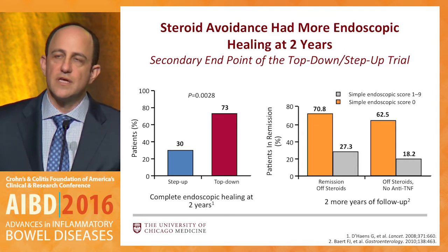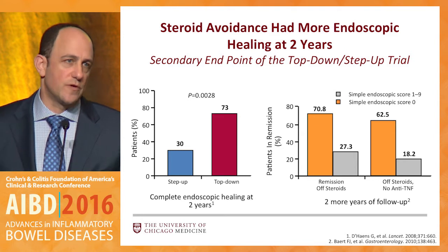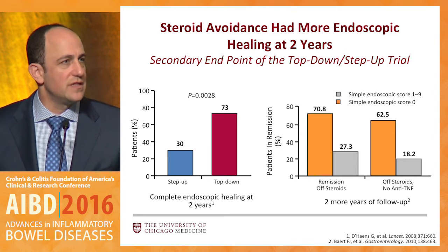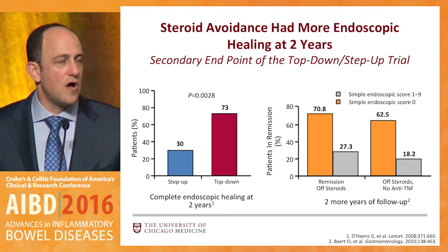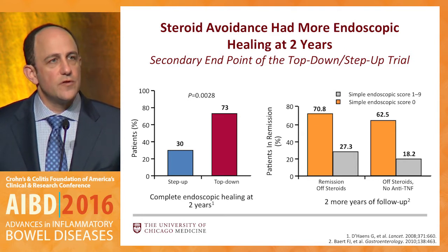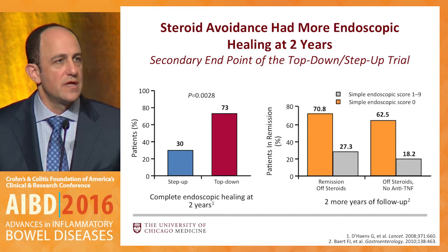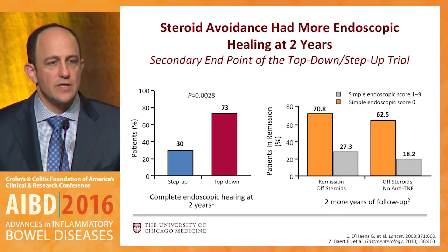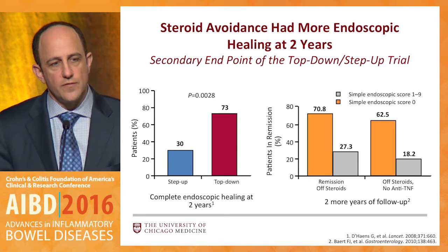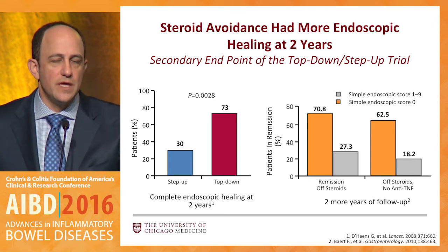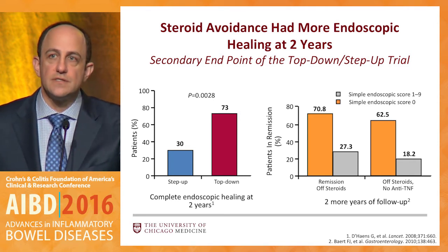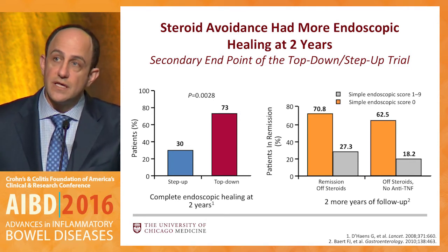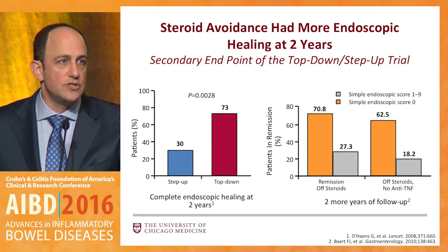This was one of our earliest studies looking at an algorithmic approach to IBD, but there were a lot of unanswered questions and challenges to incorporating this into practice. We shouldn't just give everybody with Crohn's disease the top-down strategy — it has to be the right patients who have the right risk of progression and the right risk of complications. We heard from Corey who those patients might be and how we might use a disease severity index to understand who we might choose.